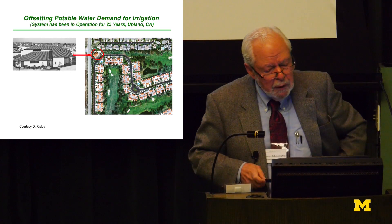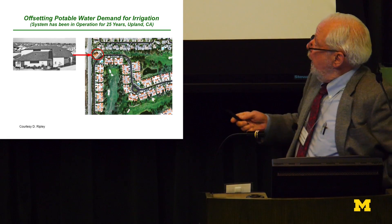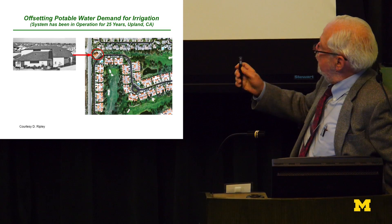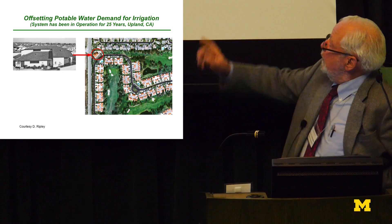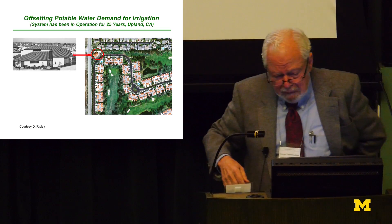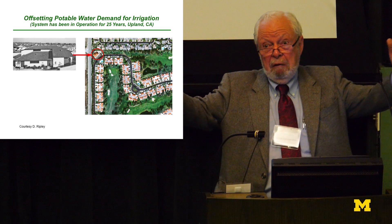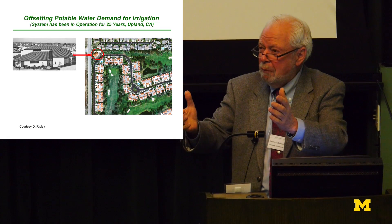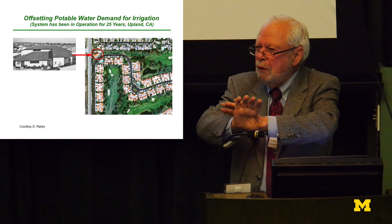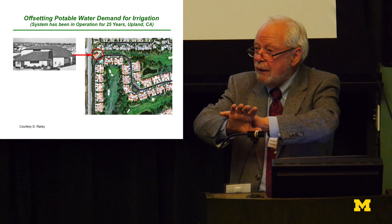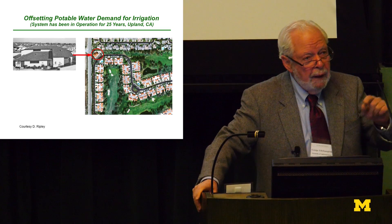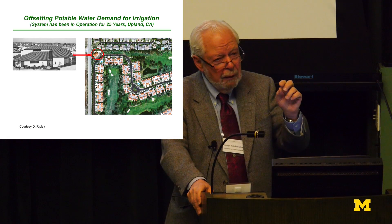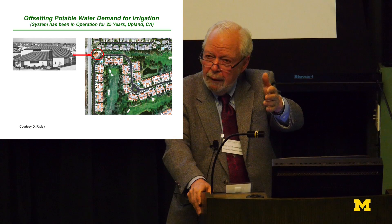This system in Southern California has been in operation for about 25 years. When you talk to people in the neighborhood about the house in the circle, they say 'those folks are a bit wealthier because it's a big house.' Actually, it's the wastewater treatment plant — an extraction wastewater treatment plant. No one in the whole neighborhood ever knew anything about it; it looks just like every other house. The point is: when we build systems in satellite locations, they should not look like industrial facilities — they should look like the buildings surrounding that area.